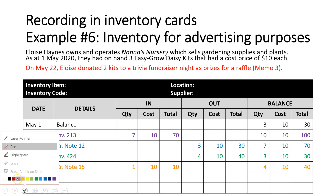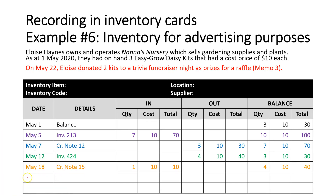Transaction five: on May 22, the owner Eloise donated two kits to a trivia fundraiser night as prizes for a raffle. We don't donate these for no reason — we donate things to promote our business, so this is actually advertising. Rather than a Donations account, we treat this as a withdrawal of inventory for advertising purposes, which is why it creates a memo. Memo 3 is our source document, and we record two kits leaving the business in the Out column, leaving two kits remaining in stock.